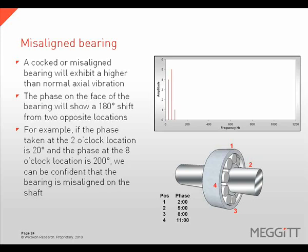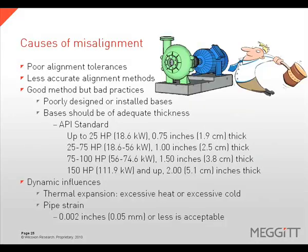The phase shift can be at any two locations around the face of the bearing that are 180 degrees apart. There are many causes of misalignment, including poor alignment tolerances, less accurate methods such as a straight edge, poorly designed bases, and dynamic influences like thermal growth or pipe strain.